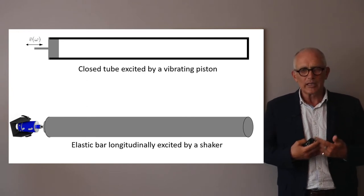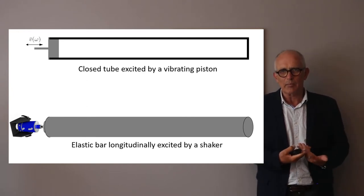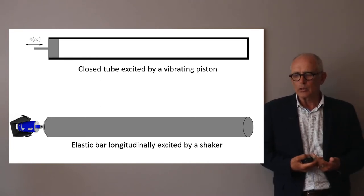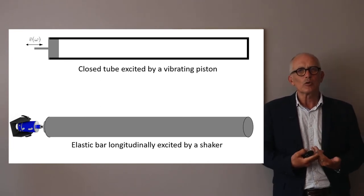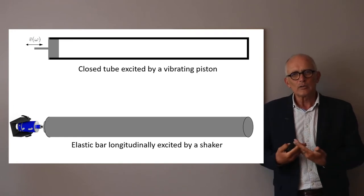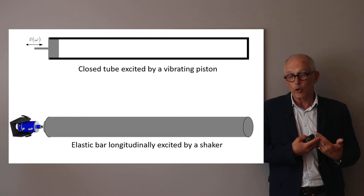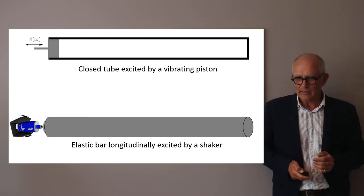The similar case will be an elastic bar excited along its axis by a shaker. In both cases I will assume the system is perfectly one-dimensional. We'll come back on the validity of that assumption, but definitely we consider that the only coordinate along which things are changing is the X coordinate.